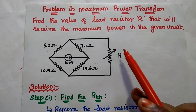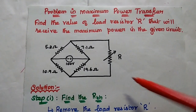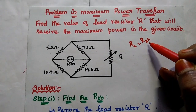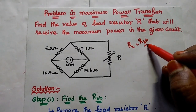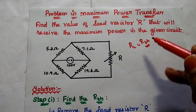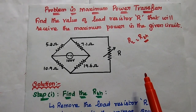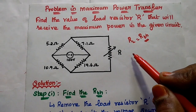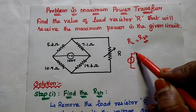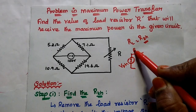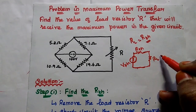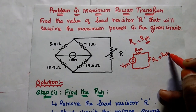We can use the maximum power transfer theorem with the condition that the load resistor is equal to the internal resistance of the given circuit. We can mention this internal resistance as the Thevenin's equivalent resistance. So first we have to find out the Thevenin's equivalent resistance, Thevenin's voltage, and then draw the Thevenin's equivalent circuit with values Vth and Rth. Then we equate RL equal to Rth to get the maximum power.